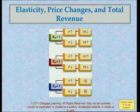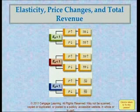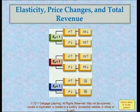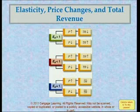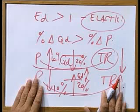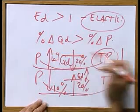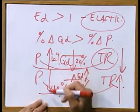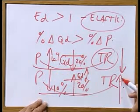This exhibit summarizes the relationship. From it, you can see: if ED is greater than 1 and the price increases, total revenue will decrease. If the price decreases, total revenue will increase. So to go back: price increase leads to total revenue decrease; price decrease leads to total revenue increase.